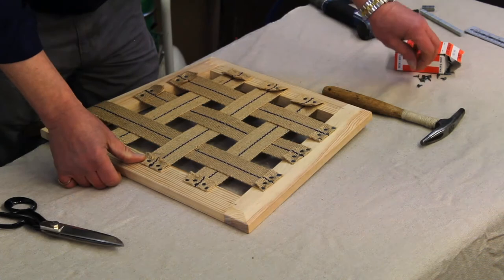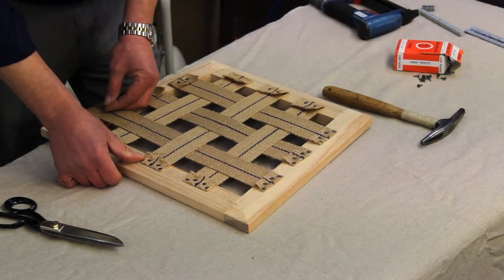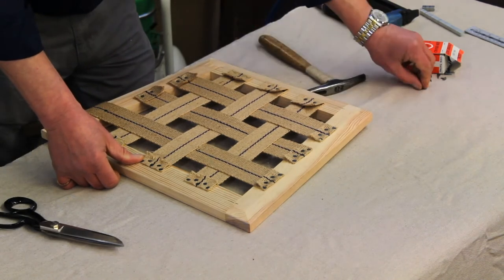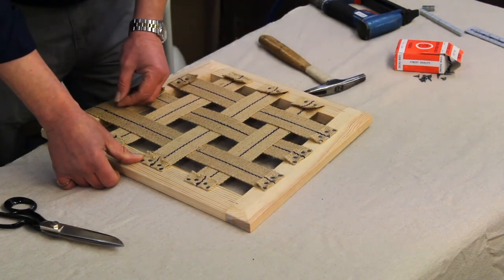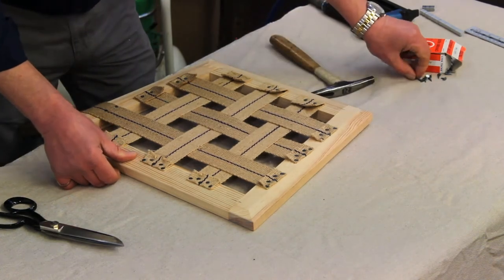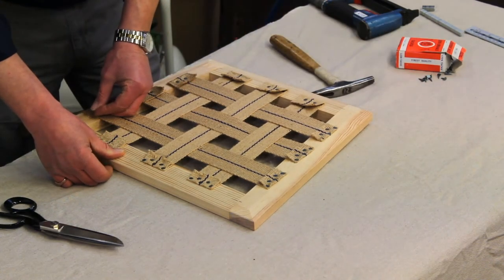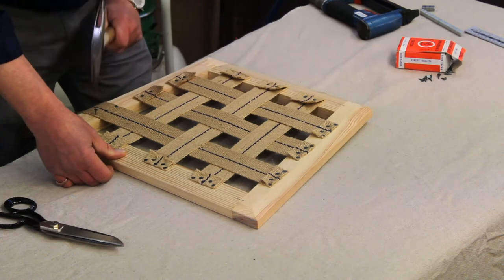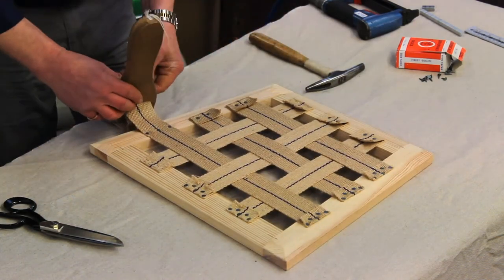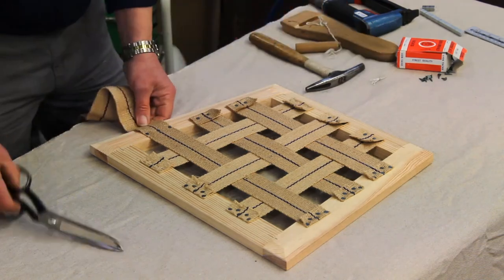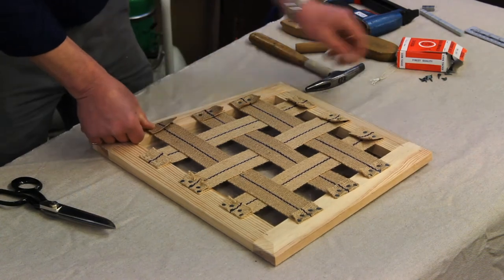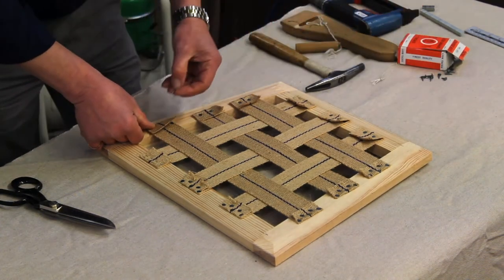I take my three tacks again, one in the centre, one to either outside edge. Remove the strainer, a quick trim, fold over, and two tacks on the top.